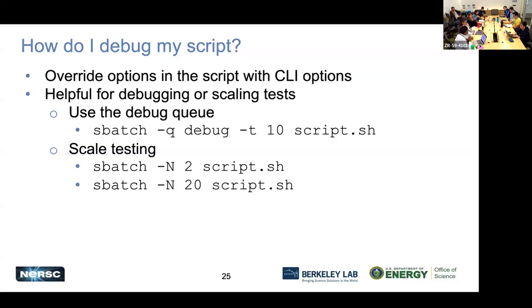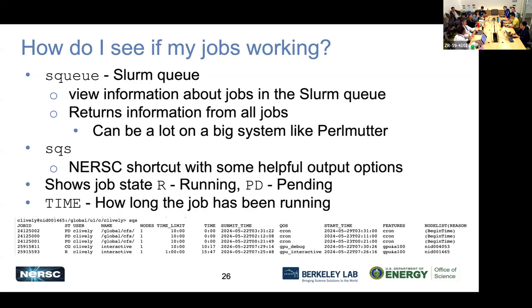How do I debug my script? There are different command line options for debugging and scaling your tests. You can specify debug QoS, the time you want, and submit that script. You can also do scale testing to test the scalability and performance of your code, choosing a specific multiple from 1 to 128 nodes or however your application needs to scale. We have specific trainings on performance tools — look for communications about those in our weekly Monday email.